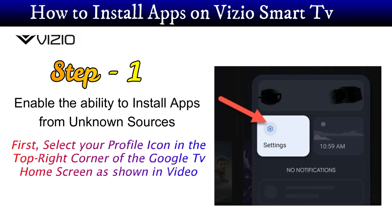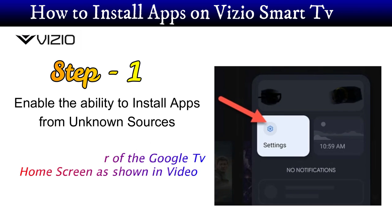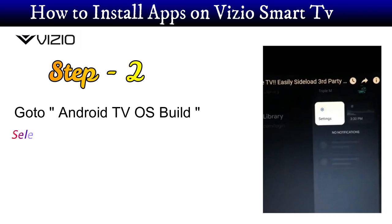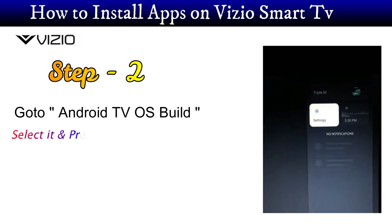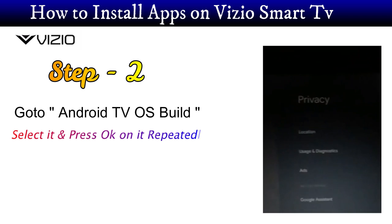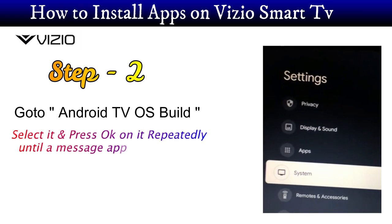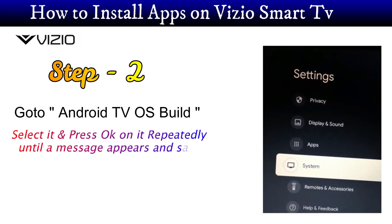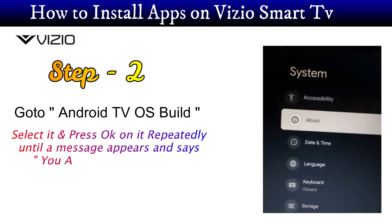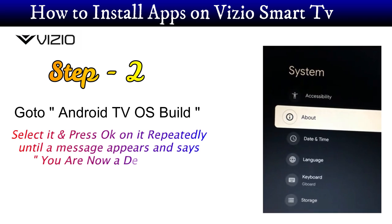For this, you have to select your profile icon in the top right corner of the Google TV home screen as shown in the video. Next step is to go to Android TV OS build.